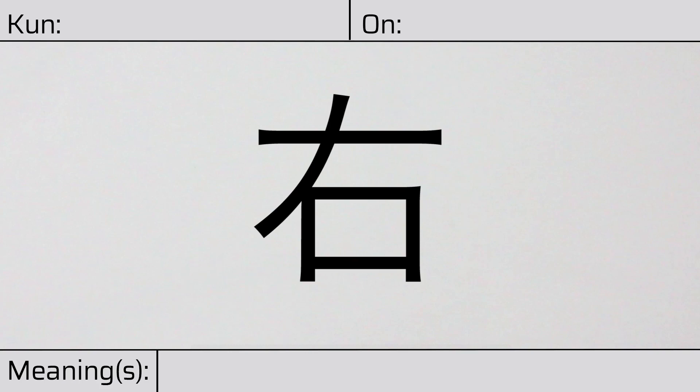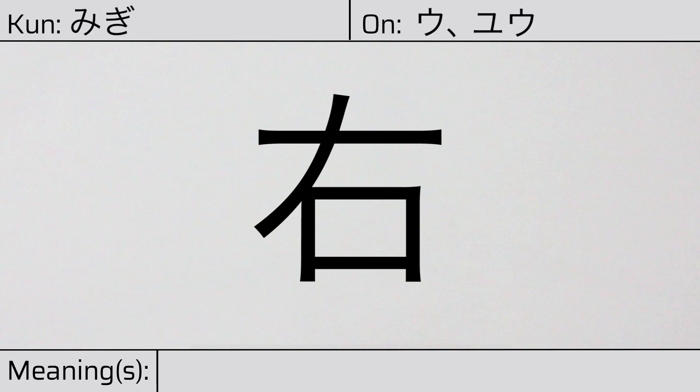Welcome to this lesson on Japanese kanji. Today, we'll be discussing this character. This kanji has a kunyomi, or Japanese reading of migi. And it has an onyomi, or Chinese readings of u or yu. This character has the meaning right.